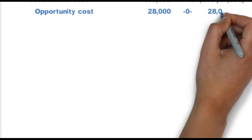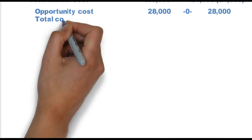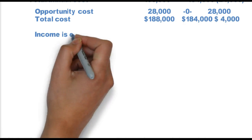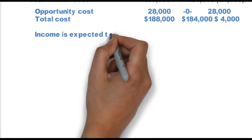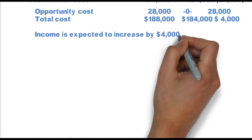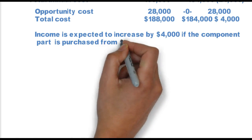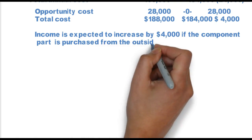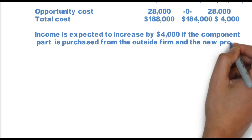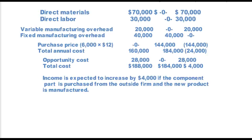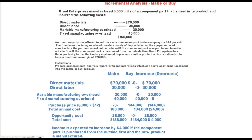However, opportunity costs come in. The opportunity cost is a foregone $28,000 if I continue to manufacture, so that becomes a cost to the alternative of making. With that included, income will be increased by $4,000 if I make it. So there you have the make or buy decision.